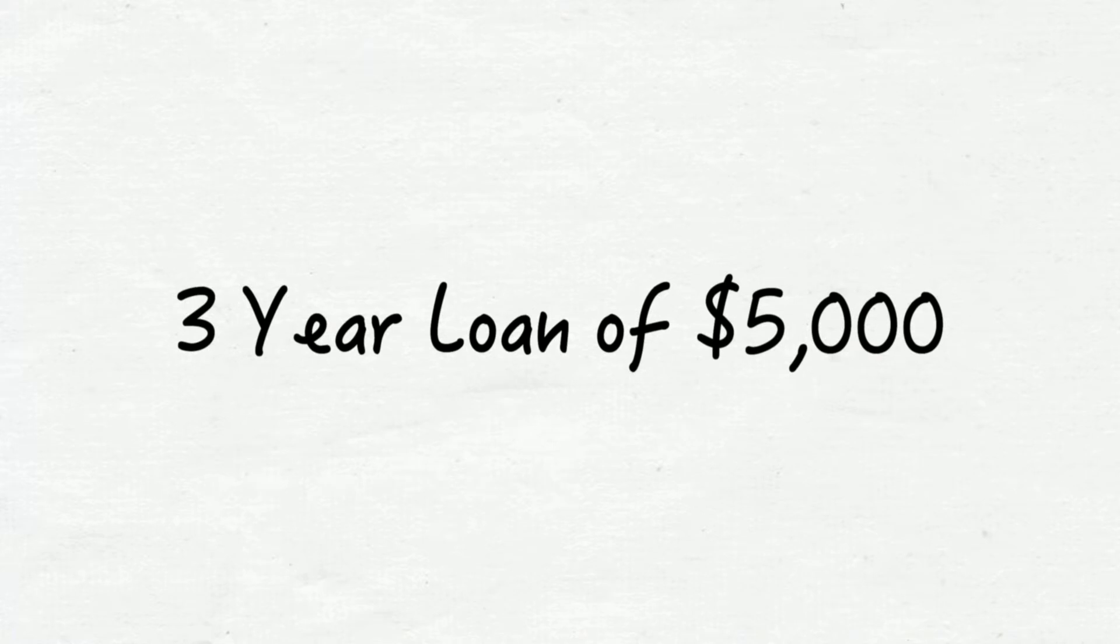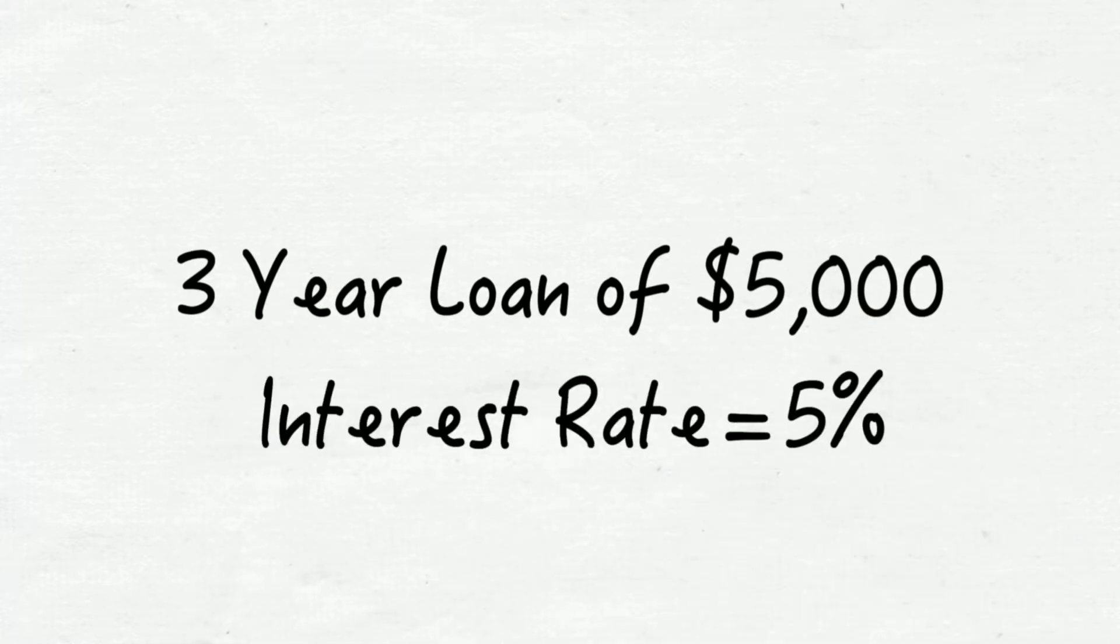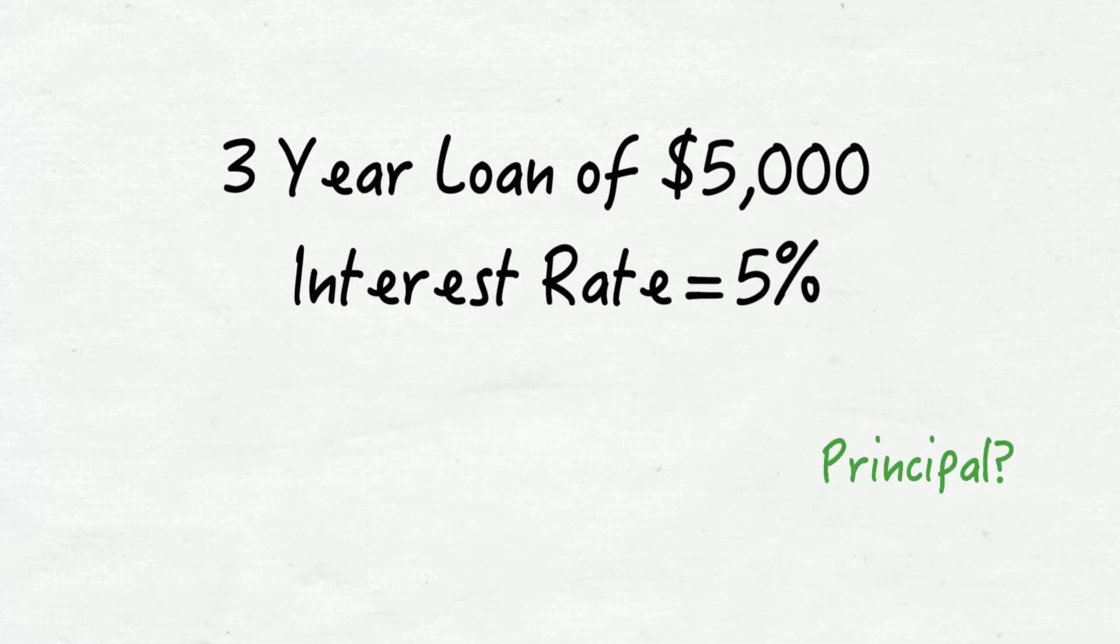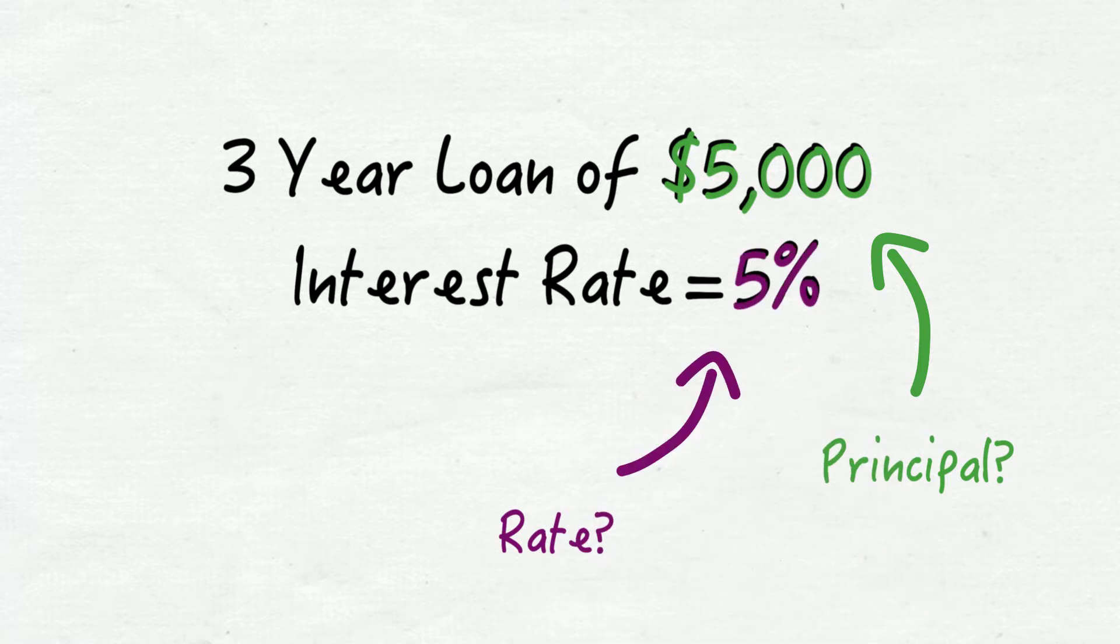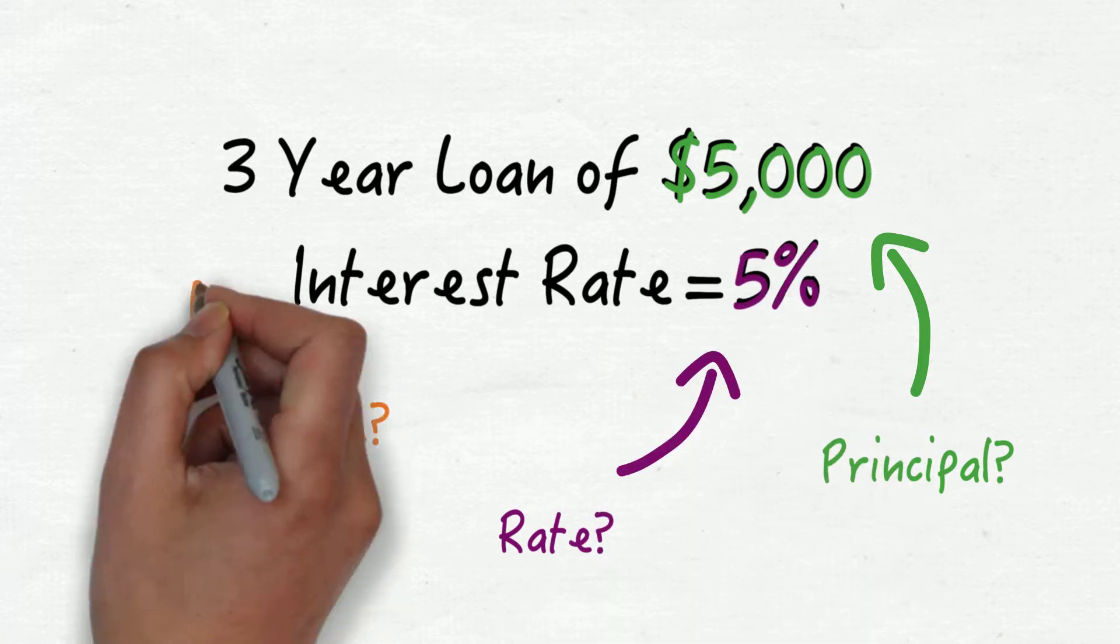Say you had a 3-year loan of $5,000 and the interest rate was 5%. What would be the principal? $5,000, the amount of the debt. What rate is the interest? 5%. How long is the term? 3 years.